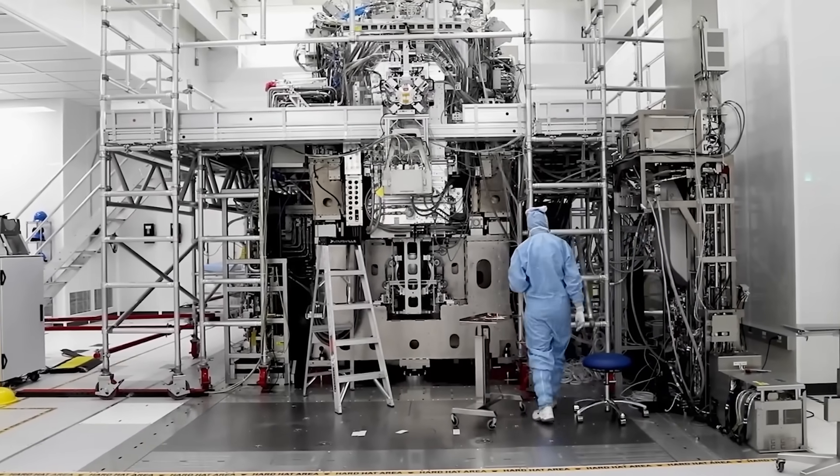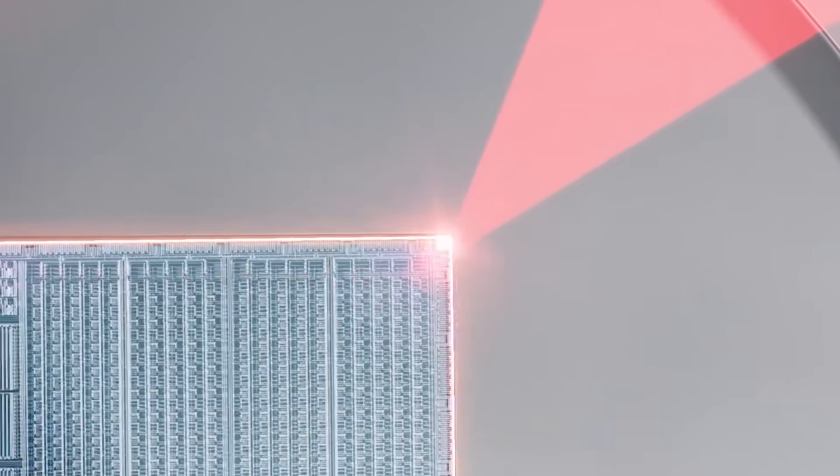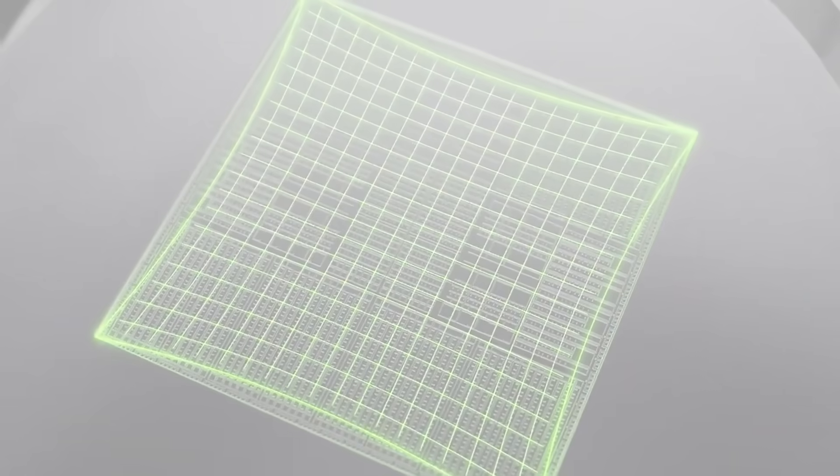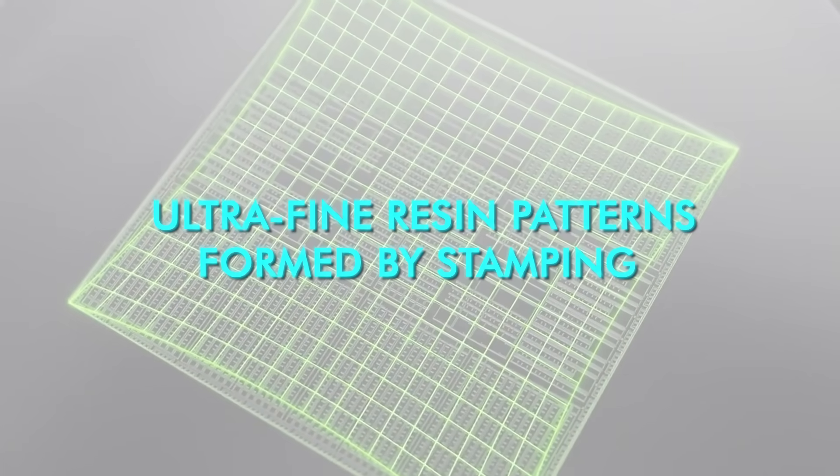Nano-imprint changes that equation entirely. Instead of using high-energy light to expose patterns through complex optics, NIL creates fine circuit patterns using ultra-fine resin patterns formed by stamping.